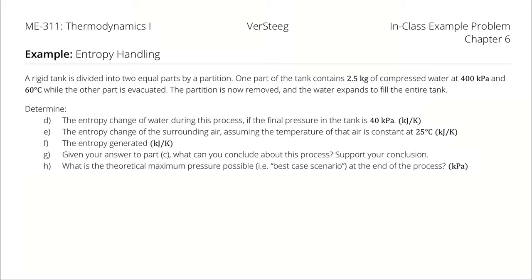A rigid tank is divided into two equal parts by a partition. One part contains two and a half kilograms of compressed water at 400 kilopascals and 60 degrees Celsius, while the other part is evacuated. The partition is now removed and the water expands to fill the entire tank. Determine: first, the entropy change of the water; second, the entropy change of the surrounding air at 25 degrees Celsius; third, the entropy generated; fourth, what that implies about the process; and fifth, the best case scenario pressure.